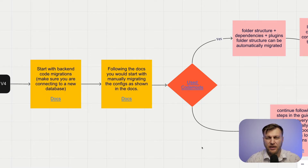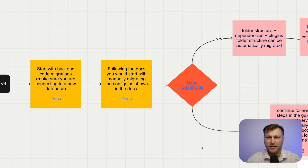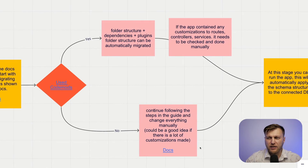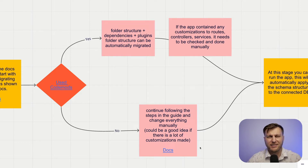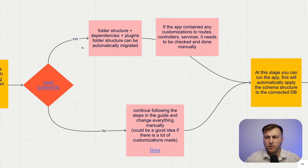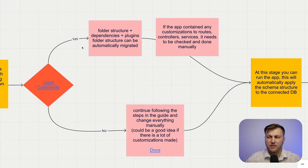In your V3 project, once you point to a new database, you will start manually migrating the configurations as shown in the documentation. Once all your configurations have been migrated, we will start to use code mods, which is a script that will allow you to migrate your schema and some of the file structure that is very difficult to do manually. This will help you upgrade your folder structure, your dependencies, and the plugin folder structure can also be migrated automatically using this tool.